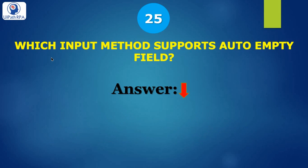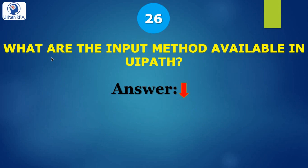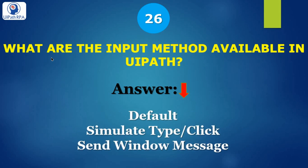Question 25: which input method supports auto empty field? Answer is Simulate Type/Click method. Question 26: what are the input methods available in UiPath? There are three input methods: first is the Default method (if you have not applied anything), second is Simulate Type/Click method, and third is Send Window Messages method.